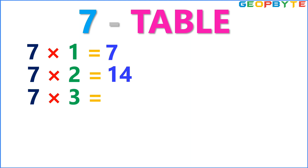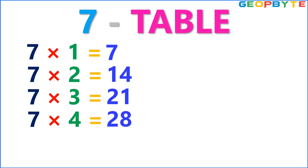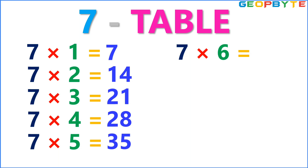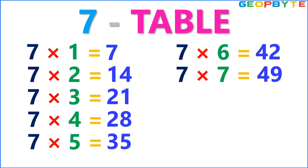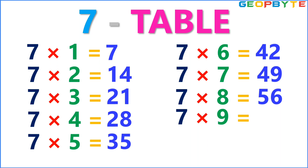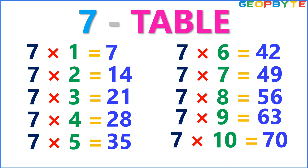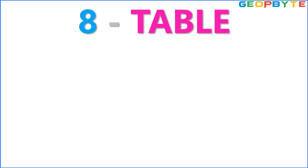Now let us see the 7 table. 7 1s are 7. 7 2s are 14. 7 3s are 21. 7 4s are 28. 7 5s are 35. 7 6s are 42. 7 7s are 49. 7 8s are 56. 7 9s are 63. 7 10s are 70.